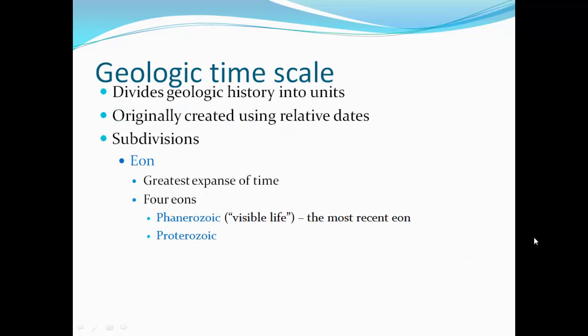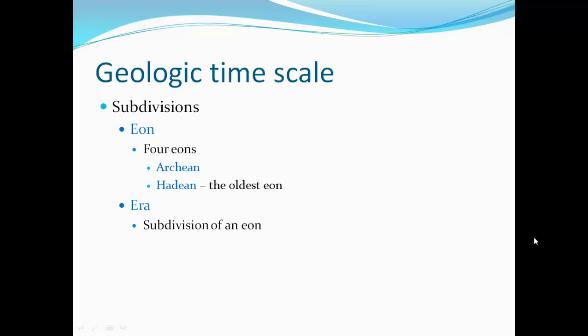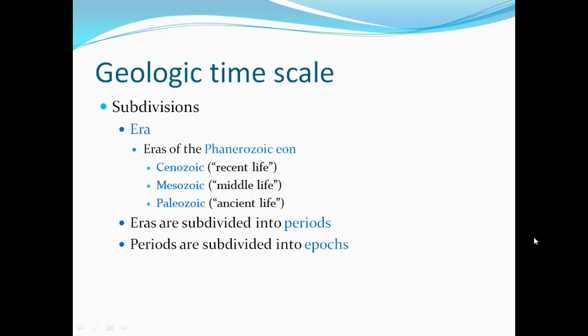The geologic time scale divides Earth's history into geologic time units, and was originally created using relative dates. The major subdivisions: the eon is the greatest expanse of time — we have four eons: the Phanerozoic (visible life, our most recent eon), the Proterozoic, the Archean, and the Hadean (the oldest eon). Eons break into eras, which are subdivisions of the eon. In the Phanerozoic, we have the Cenozoic (recent life), the Mesozoic (middle life), and the Paleozoic (ancient life). Eras are then subdivided into periods, and periods are subdivided into epochs.